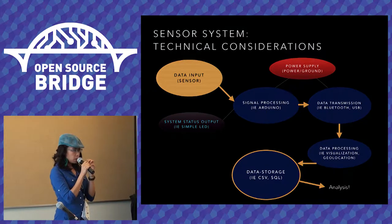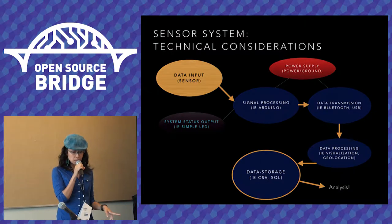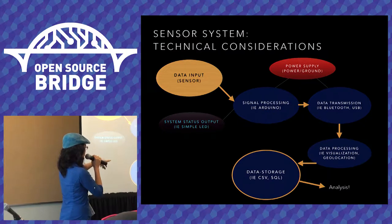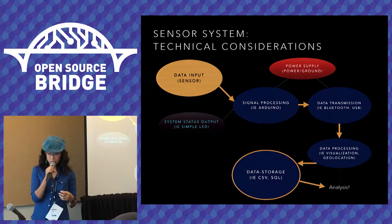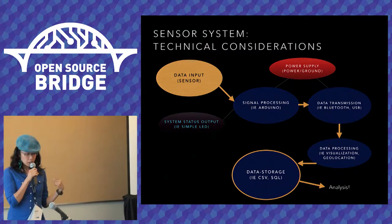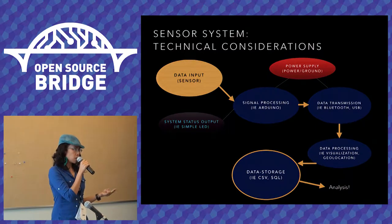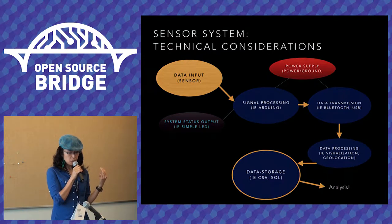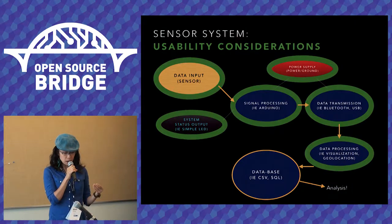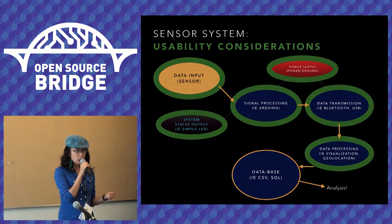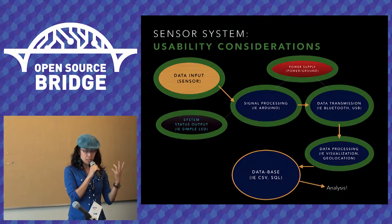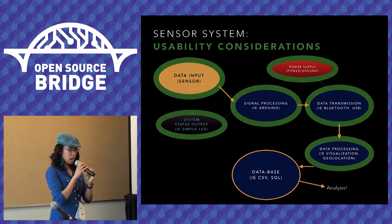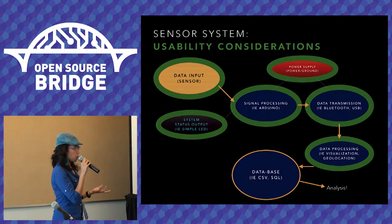In terms of building a sensor system, these are the component categories for building a DIY sensor system. That includes the sensor itself, a module to process the signal — in many cases an Arduino or Raspberry Pi — a way to power the system, a way to transmit the data either through a cable or wirelessly, a way to process the data on the fly or send it to a central processing center, and some kind of simple system status output — for instance, a little green indicator light like on this microphone.